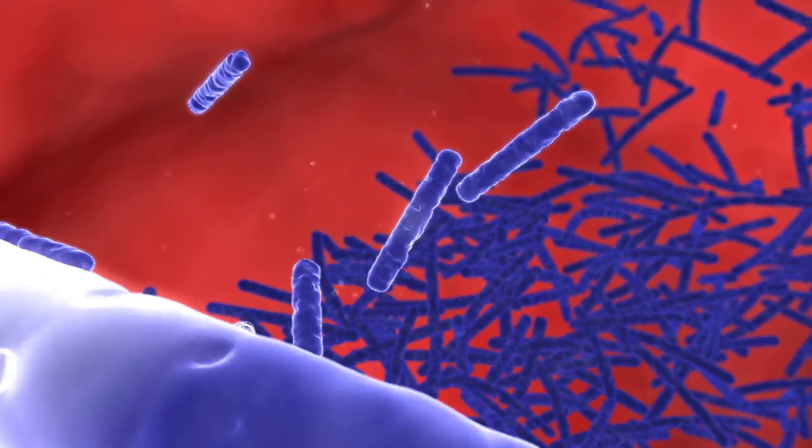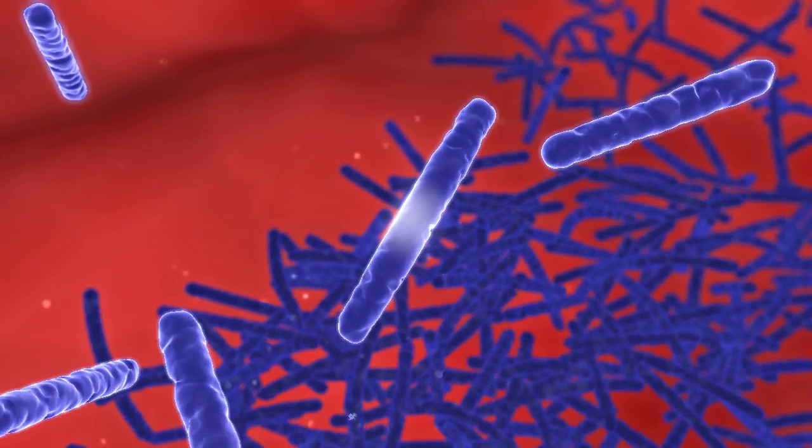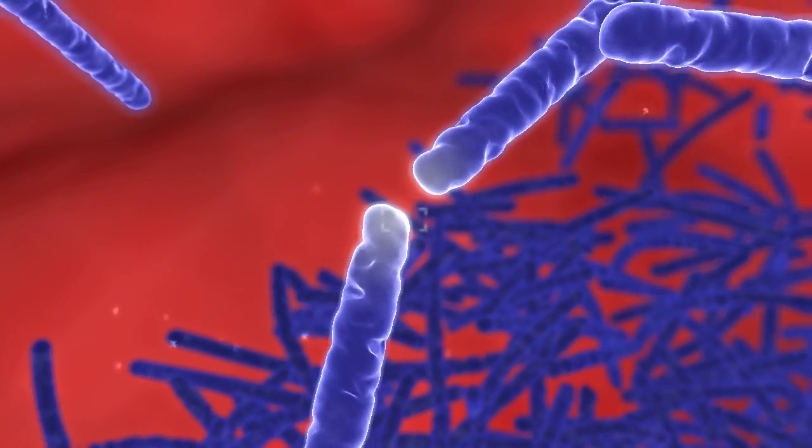Tubercle bacilli have a complicated cell envelope, which protects them from the environment and from the action of antibiotics.